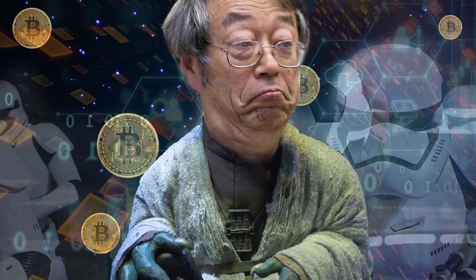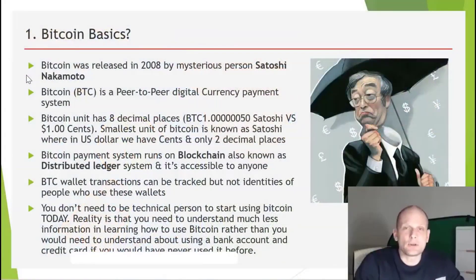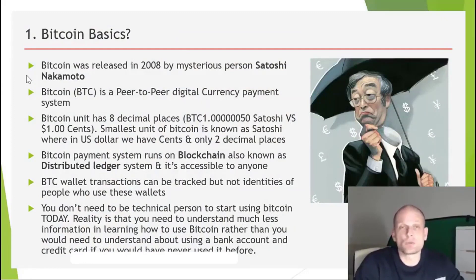Bitcoin was released back in 2008 by the mysterious person Satoshi Nakamoto, who created Bitcoin. However, the first transaction on Bitcoin blockchain technology was done only in 2009.